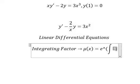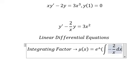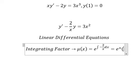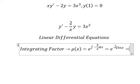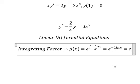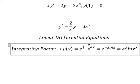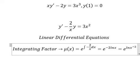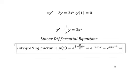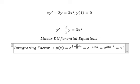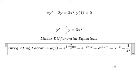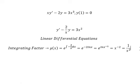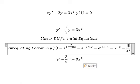I will put this one in here. We have negative two, and that means we put negative two inside the natural log. This gives us e to the power of negative two natural log of x, which equals one over x squared. That means we need to multiply both sides by this one.